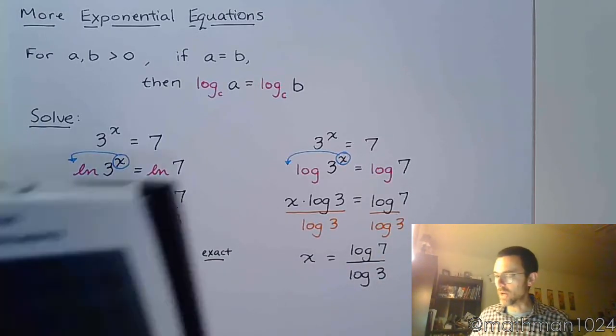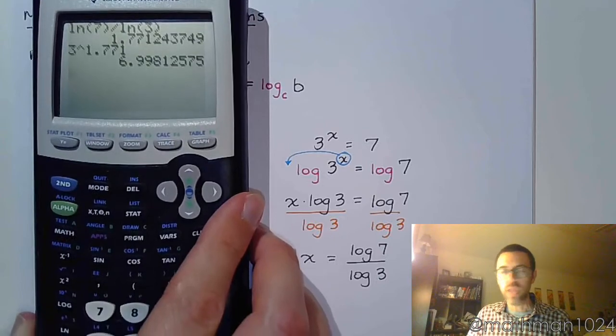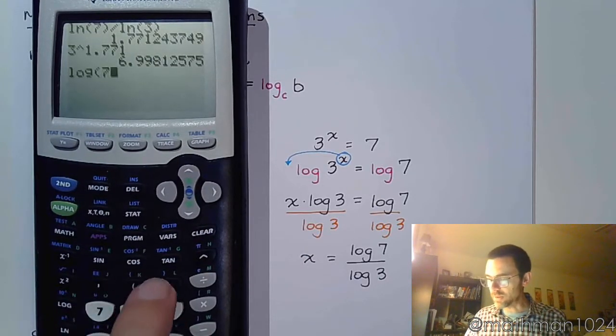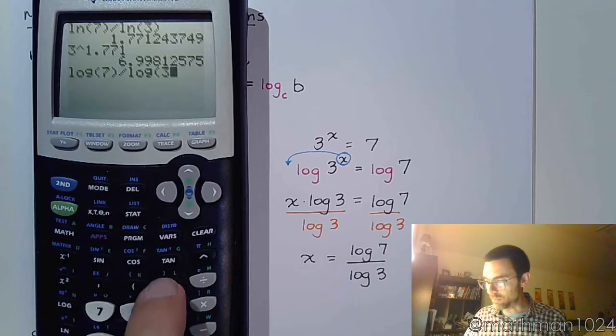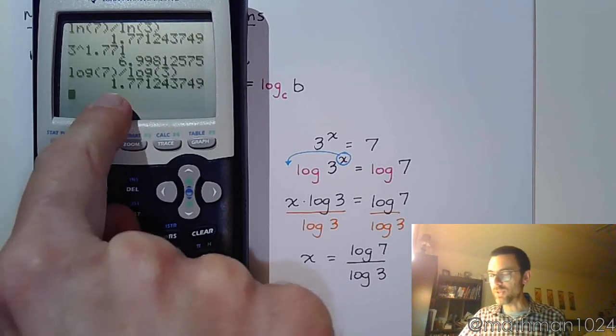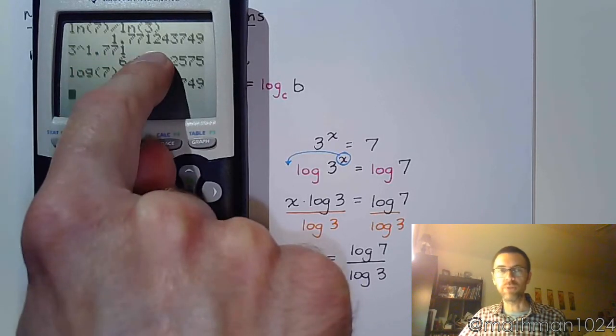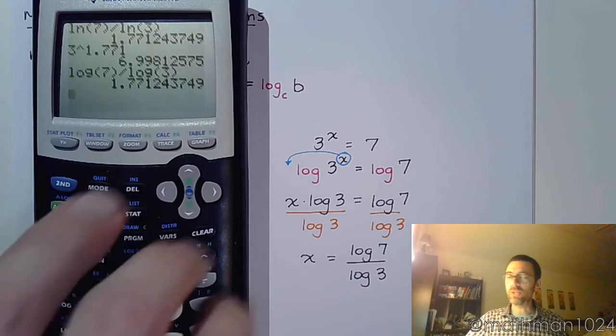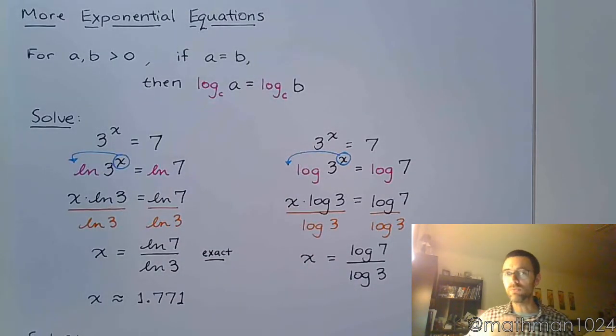And if we come back to our calculator, and we type that in, we do log of 7, close parentheses, divided by log of 3, we get the same decimal value that we had up here. And we already know that it works out. So either of these answers is going to be okay.